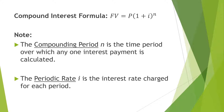Here's the compound interest formula. It has a couple of new variables that we haven't used before. The compound interest formula says the future value is equal to P times 1 plus I raised to the N. We already know what P is — P is the principal. Also, don't forget that on the homework, sometimes they'll call the principal the present value, so don't let that confuse you.